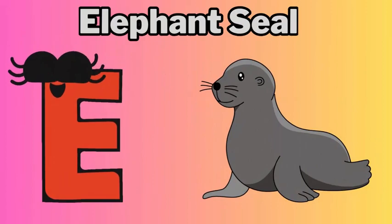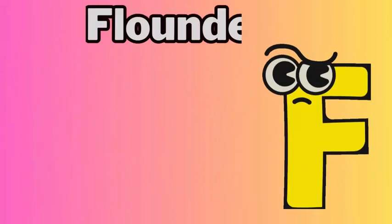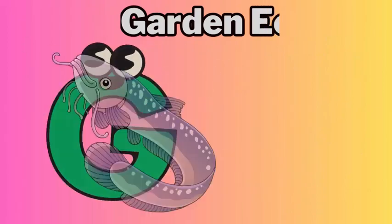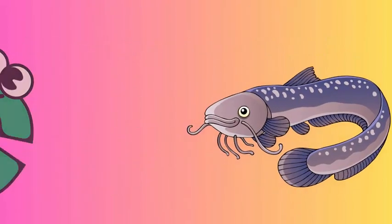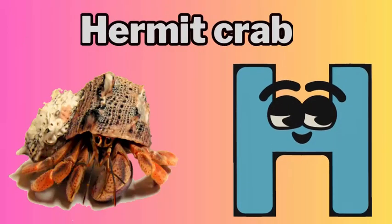E for elephant seal. F for flounder. G for garden eel. H for hermit crab.